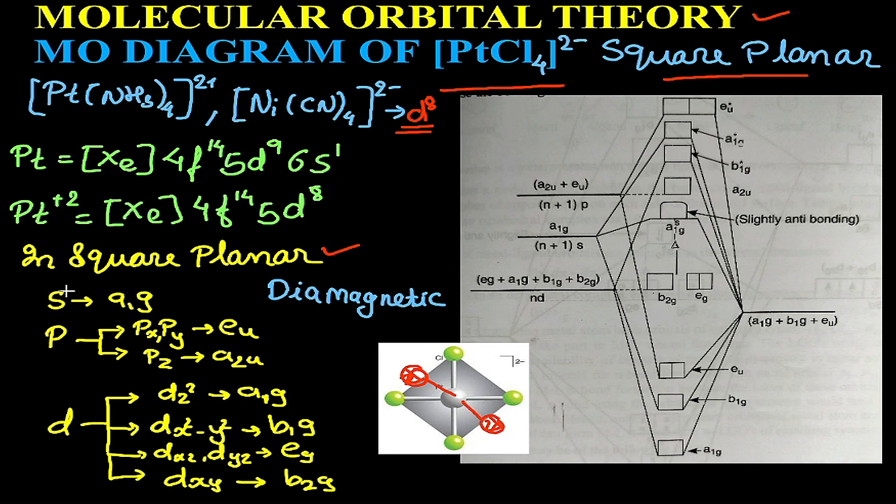The symmetries of the orbitals will be: s orbital is a1g. Again, as we have center of symmetry, gerade and ungerade will be written. The point group is D4h for this particular molecule. S is a1g, p orbital px and py have same energy so it is being designated as eu as they are ungerade, and pz is a2u.